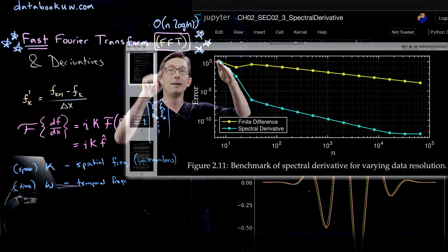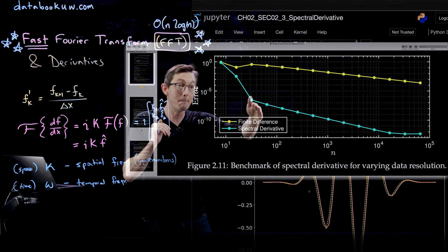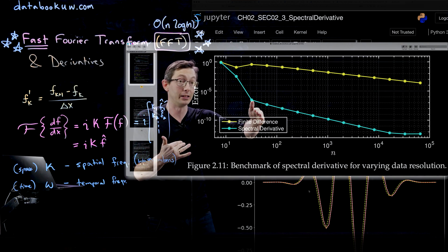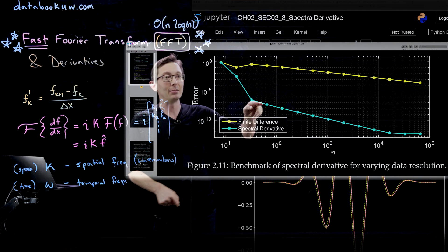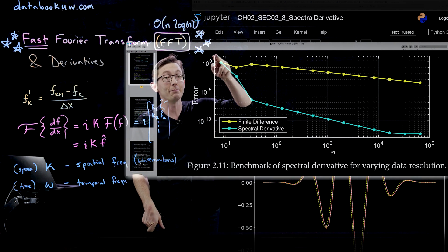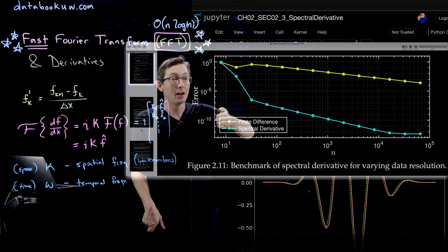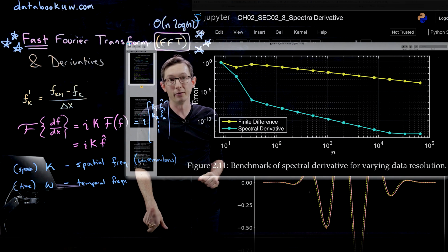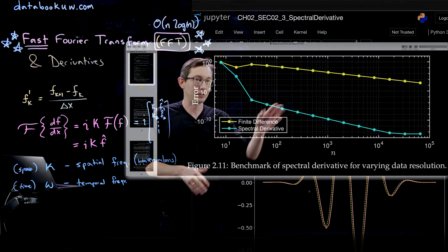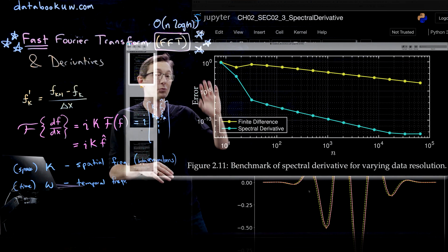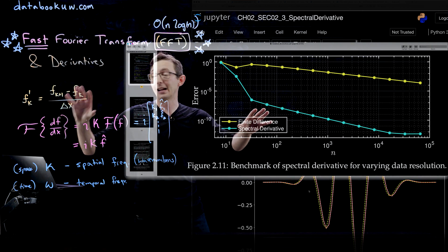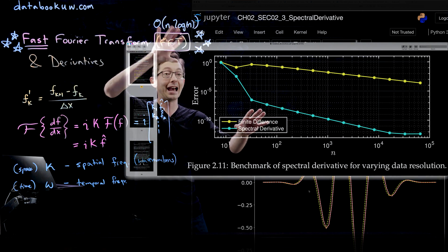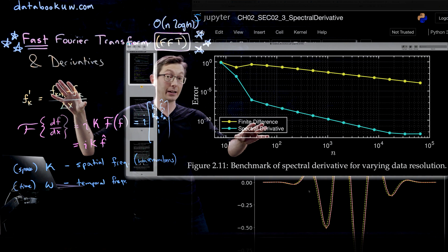Whereas our spectral derivative, our fft derivative, gets more accurate very rapidly. The more points I include in my data, the smaller delta x's, this fft-based derivative gets much more accurate and much more rapidly. You can tell that this error is on a log plot. I get maybe six or seven orders of magnitude increase in accuracy by just quadrupling or doubling the number of points. It's really data efficient to compute these very accurate derivatives using the fft but not using finite differences.